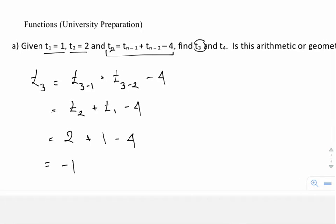For t4, I do the same thing. I plug in 4 for n, and I have t of 4 minus 1 plus t of 4 minus 2 minus 4. So I subtract my little bases there. I have t of 3, t of 2 minus 4.